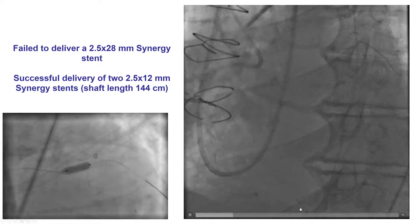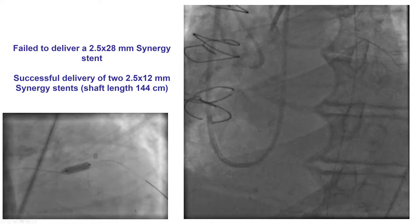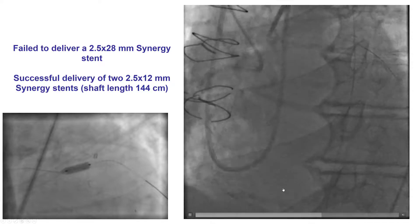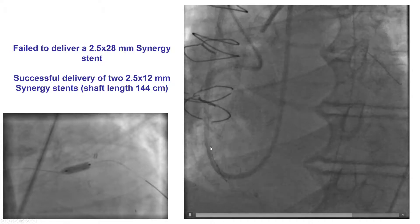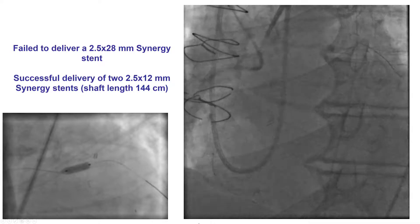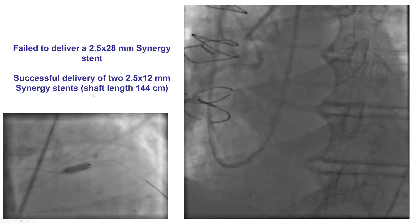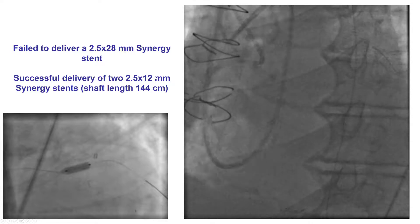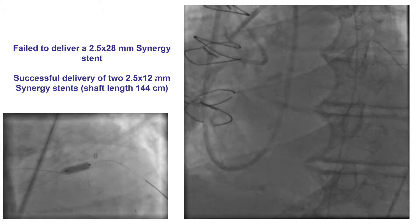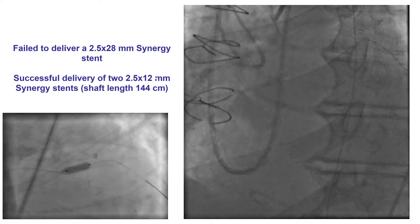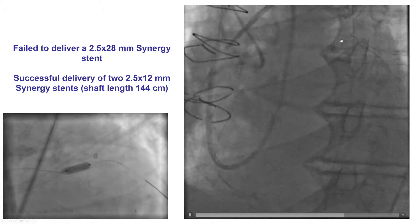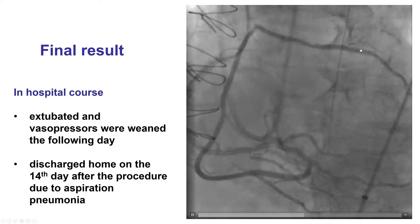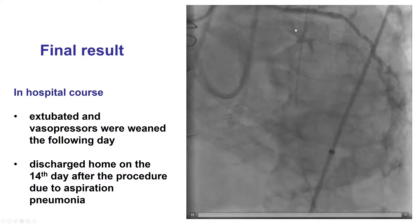We then tried to deliver a stent and had significant difficulty advancing a 28 mm stent. You can see the stent coming up through the graft, advanced all the way to the target lesion — but that stent didn't make it. We then used shorter stents, which are more flexible and easier to deliver, and were able to deliver two 2.5 by 12 mm stents all the way to the target lesion, providing a nice final result with successful expansion.